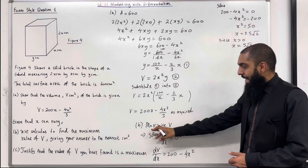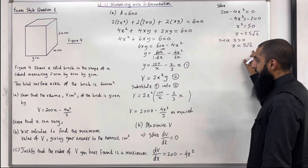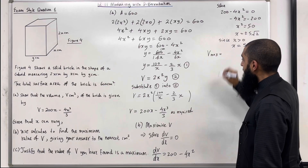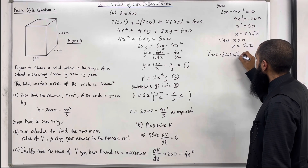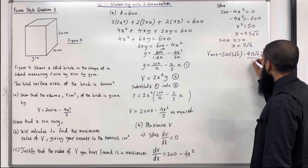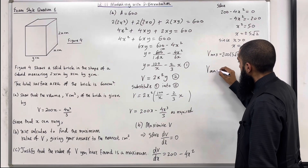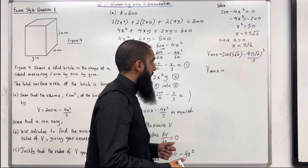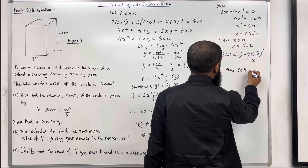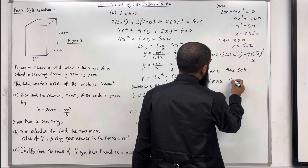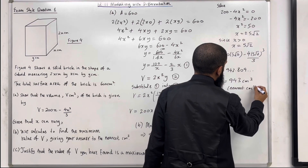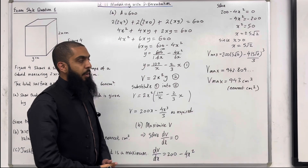To maximise v, we substitute x equals 5 root 2 into the volume equation. So v maximum equals 200 multiplied by 5 root 2, take away 4 multiplied by (5 root 2) cubed, all over 3. Putting this into the calculator, v maximum equals approximately 942.809..., so v maximum equals 943 cm³ to the nearest centimetre cubed. That completes Part B.